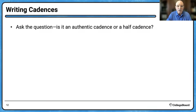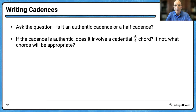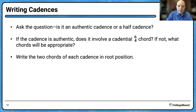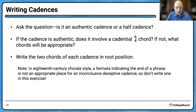So let's ask the question: is it an authentic cadence or a half cadence? If the cadence is authentic, does it involve a cadential six-four chord? If not, what chords will be appropriate? Write the two chords of each cadence in root position. In 18th century chorale style, a fermata indicating the end of a phrase is not an appropriate place for an inconclusive deceptive cadence. So please don't write one in this exercise — you're only going to write authentic and half cadences.